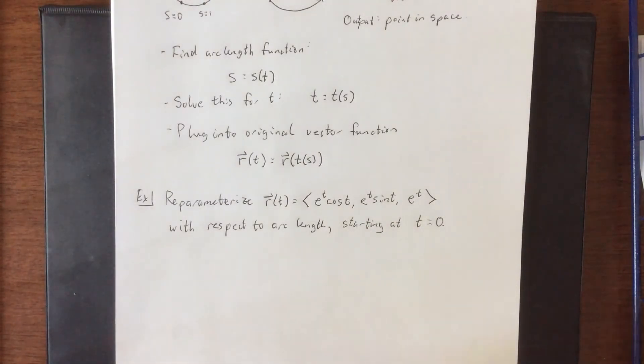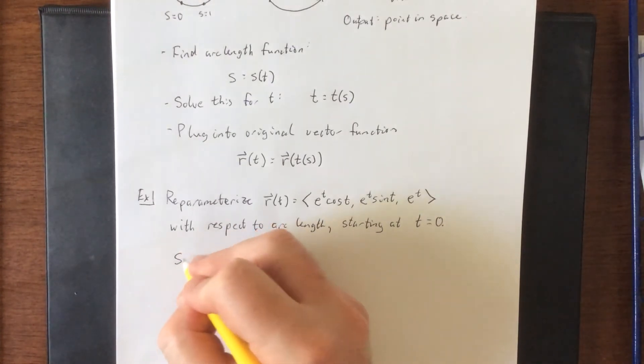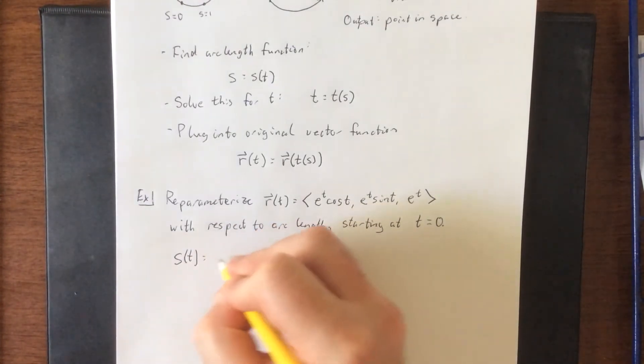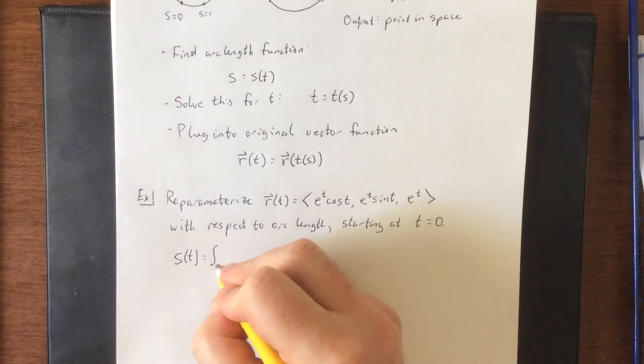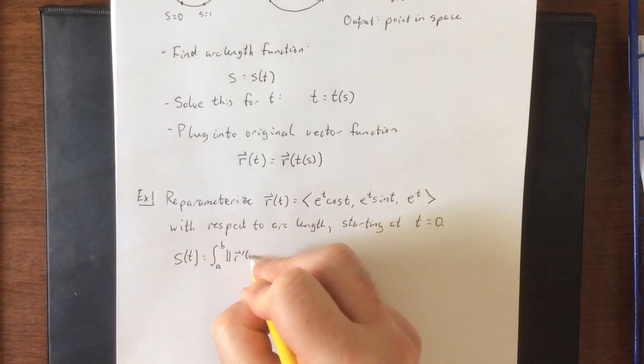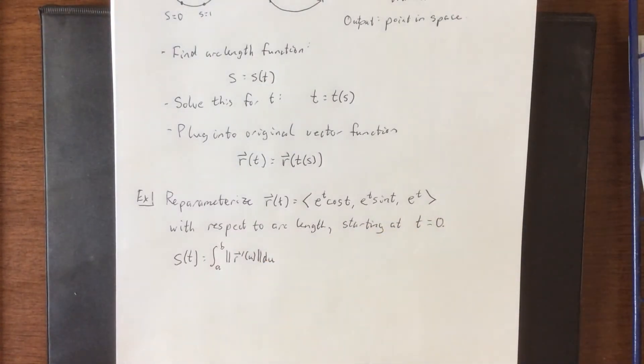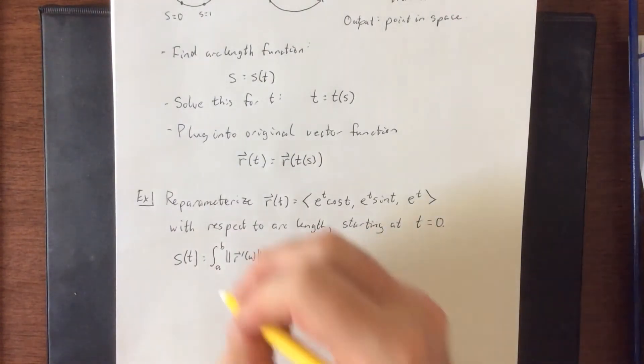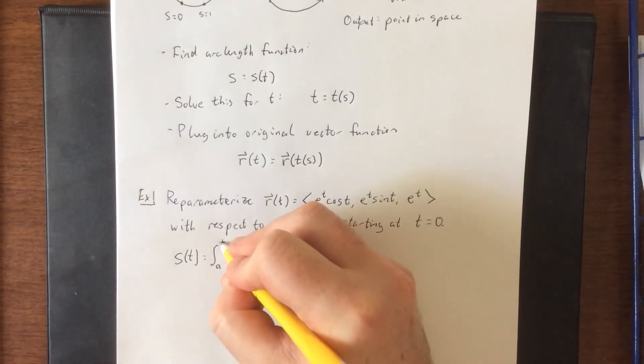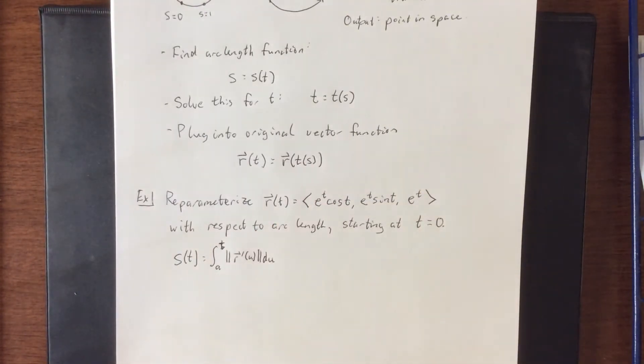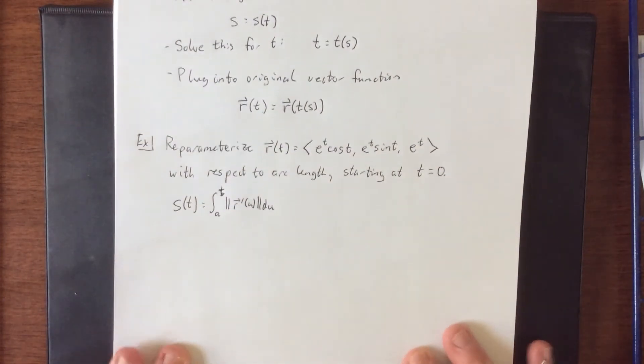So first thing we'll need to do is set up our arc length function. Arc length function is supposed to be s of t is equal to the definite integral from a to b of the magnitude of r prime of, we'll go with u for our parameter once again. Oh, excuse me, this is supposed to be a t up here, not a b. I knew that didn't feel quite right. Now our starting point is going to be t equals 0. So once we're actually setting up the integral, we'll make it a point to replace that a with a 0.